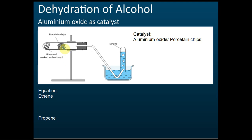The experiment is simple: heat the porcelain chips first, then heat the glass wool soaked with alcohol intermittently — heat it, remove the flame, heat again. The alcohol evaporates, and when the vapour passes through the porcelain chips, it becomes alkene. The alkene gas is then collected by downward displacement of water.